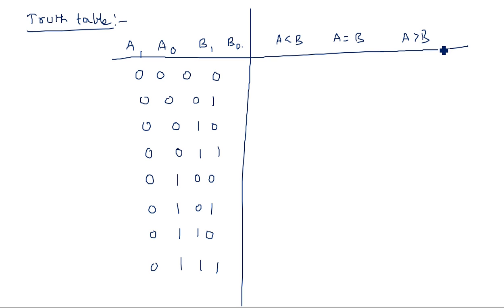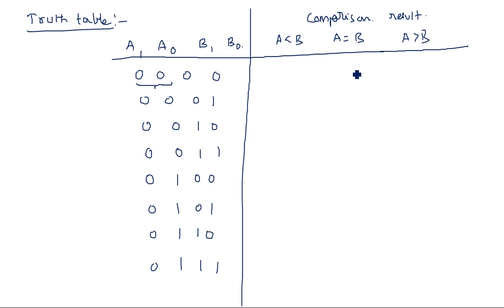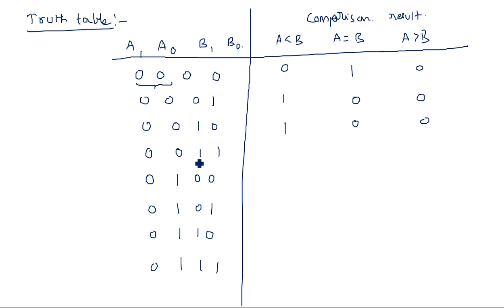Keep in mind that A has two bits of information — A0 and A1 — and B also has two bits — B0 and B1. The comparison results show the comparison on the complete value of A versus complete B. For row 0 (A=0, B=0): both are equal, so A equal to B is 1. For row 1 (A=0, B=1): A is less than B, so A less than B is 1. For row 2 (A=0, B=2): A is less than B again.